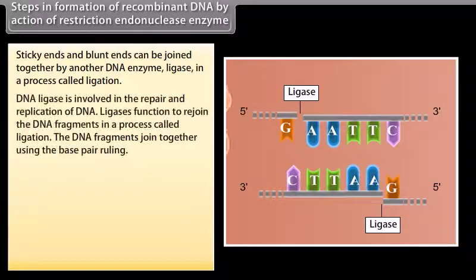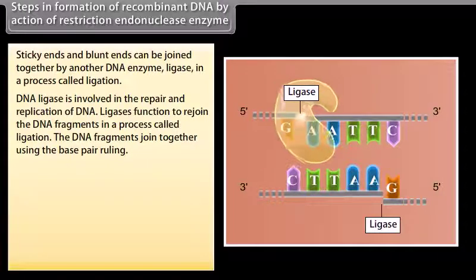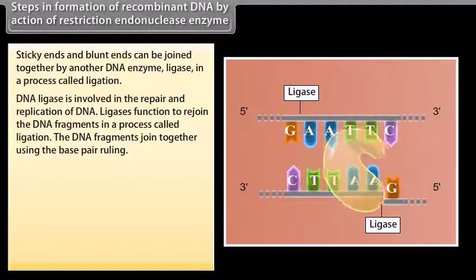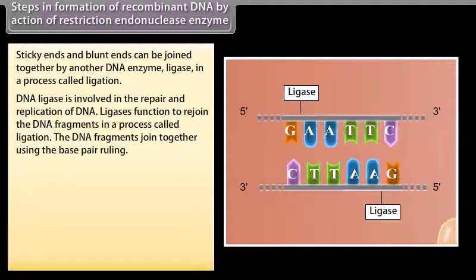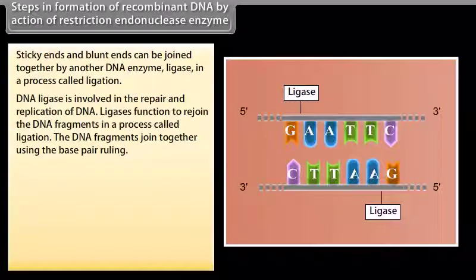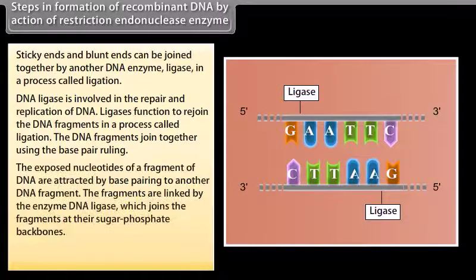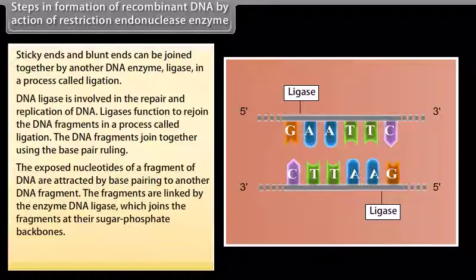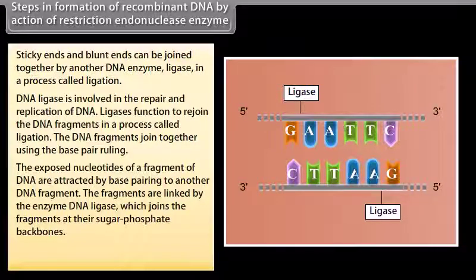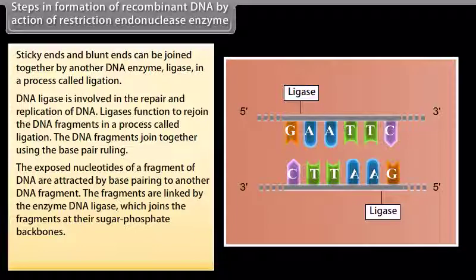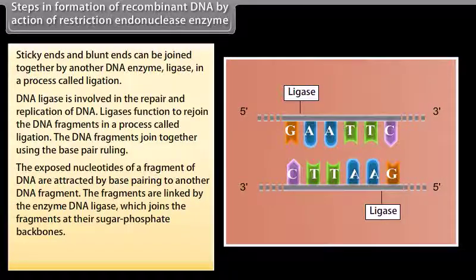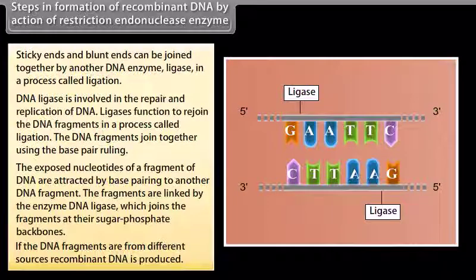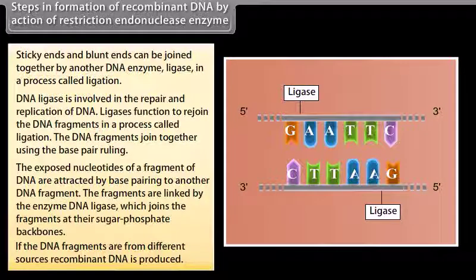DNA ligase is involved in the repair and replication of DNA. Ligase functions to rejoin the DNA fragments in a process called ligation. The DNA fragments join together using the base pair ruling. The exposed nucleotides of a fragment of DNA are attracted by base pairing of another DNA fragment. The fragments are linked by the enzyme DNA ligase which joins the fragments at their sugar phosphate backbones. If the DNA fragments are from different sources, recombinant DNA is produced.